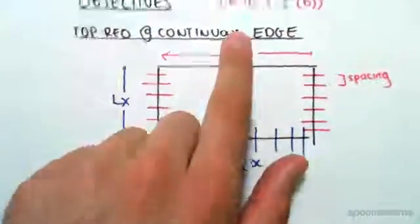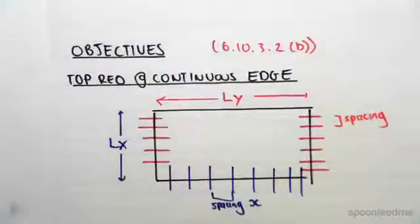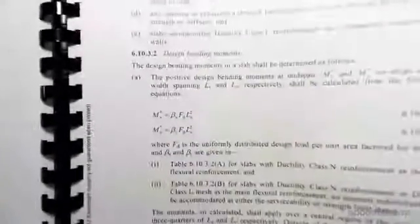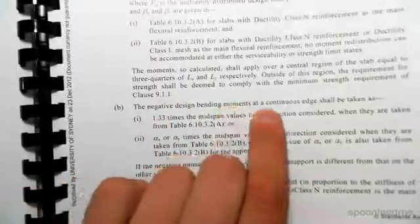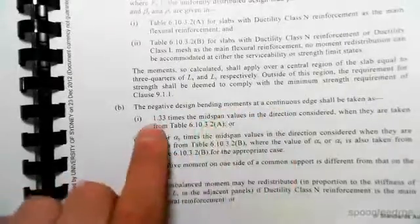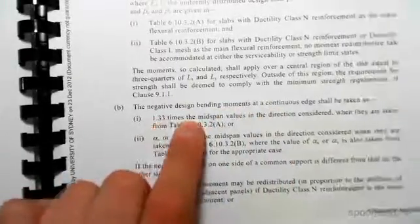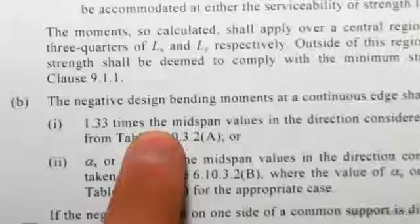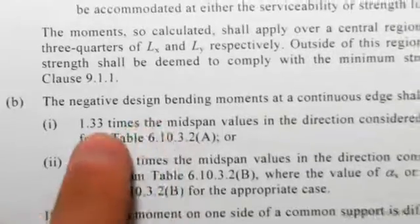We look at clause 6.10.3.2. So we saw this for slab one that for the design bending moments, we go to section B. The negative design bending moments at a continuous edge is 1.33 times the mid span values. So if I just zoom in for you in case you haven't seen it for slab one, you multiply the mid span moments by 1.33.